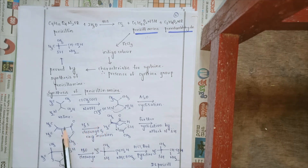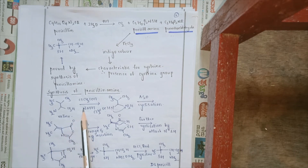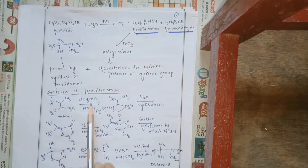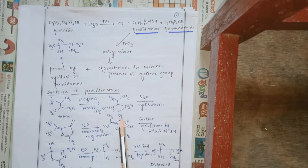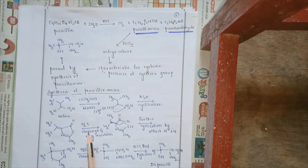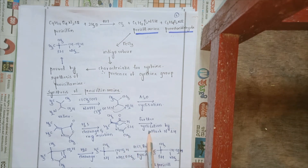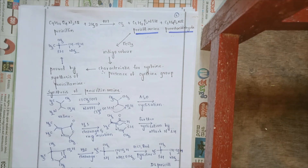For the synthesis of penicillin amine, the starting material is valine. This reacts with chloracetyl chloride in the presence of a base. The lone pair of electrons on the NH2 attacks the carbonyl carbon of chloracetyl chloride to give a substitution reaction. This intermediate in the presence of acetic anhydride undergoes cyclization to give a cyclic lactone. This cyclic lactone when it reacts with H2S, cleavage takes place at the lactone structure and there is a ring insertion reaction.